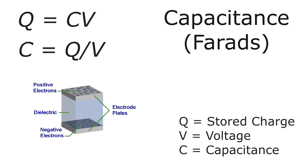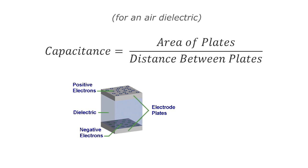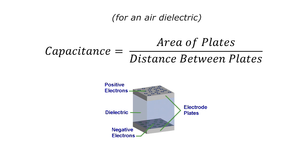Capacitors with an air dielectric, which is just air in between, have a capacitance equal to the area of the plates divided by the distance between them. So larger plates closer together are going to have a greater capacitance than small plates further apart.